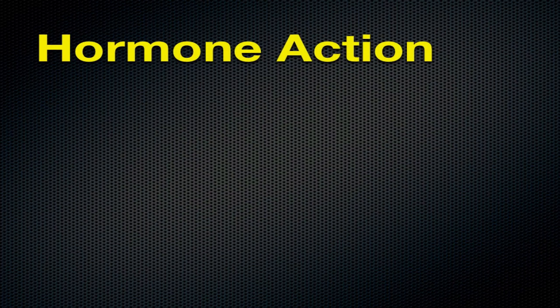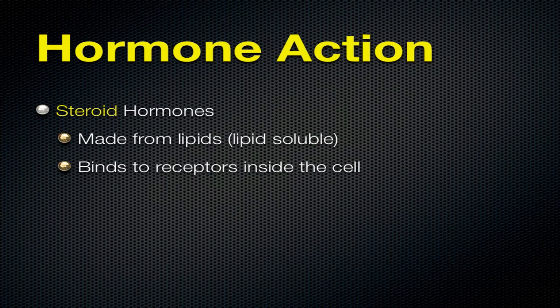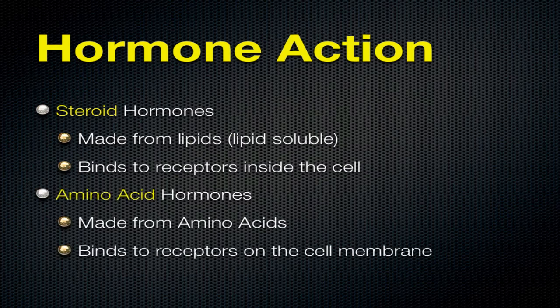We have different types of hormones. The first type is steroid hormones - these are produced in the body and are made from lipids, so they are lipid soluble and non-polar. These bind to receptors on the inside of cells. Then we have amino acid hormones, which are made of amino acids, and those bind to receptors on the cell membrane. So the two types of hormones are steroid hormones, which bind inside the cell, and amino acid hormones, which bind to receptors on the cell membrane.